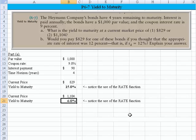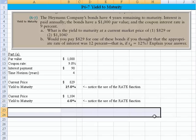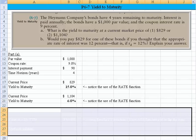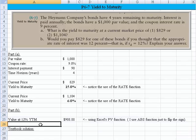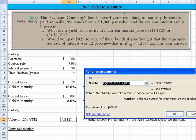Let's take a look at Part B now. Would you pay $829 for one of these bonds if you thought that the appropriate rate of interest was 12%? In other words, the required rate of interest was 12%? And explain your answer. Let's just bring that to light. In Part B, what you'd say is a yield at 12% would come out to be $908. Let me explain how I do this.